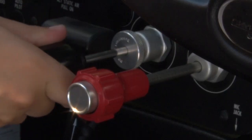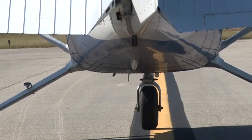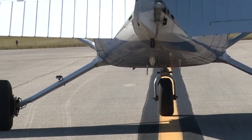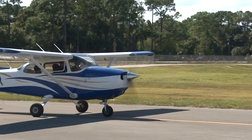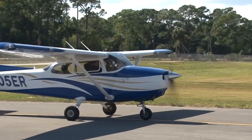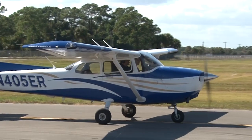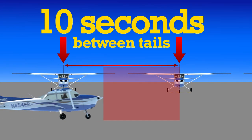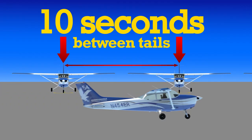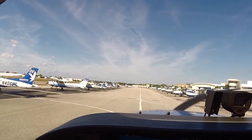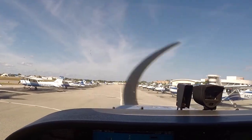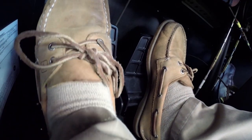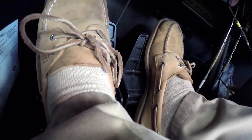Remember to reduce your throttle once you've reached your desired taxi speed. It's also important to minimize brake usage, so do not apply the brakes while the throttle is forward. You wouldn't step on the gas pedal and brake pedal at the same time while driving a car, so don't do it in an airplane. On the Riddle ramp, our speed limit is 10 seconds between tails, which is roughly 2 knots. In order to achieve this slow speed, keep the throttle at a low RPM setting, keeping your feet positioned near the brakes so that you can press them down gently when you notice yourself speeding up.